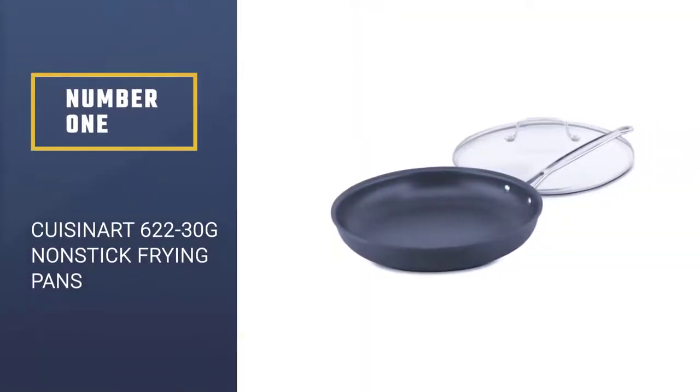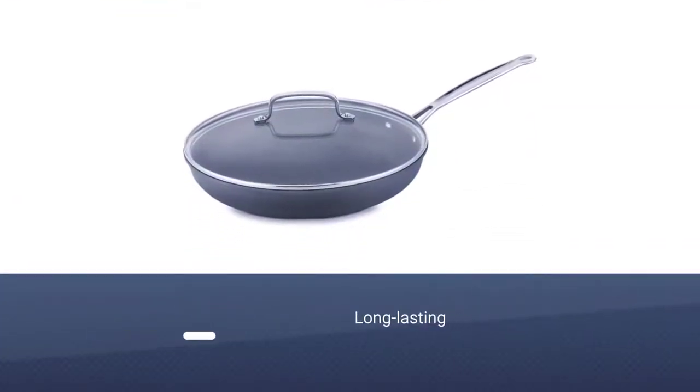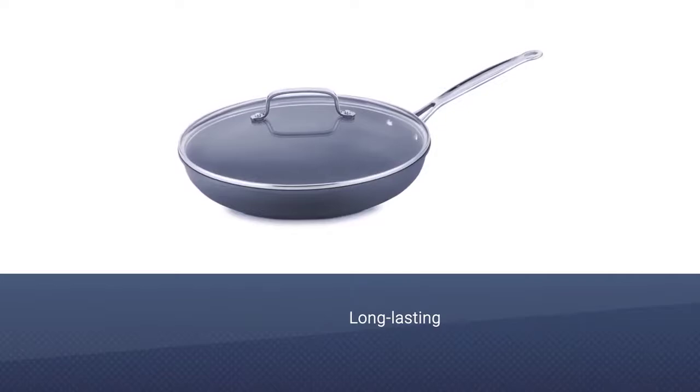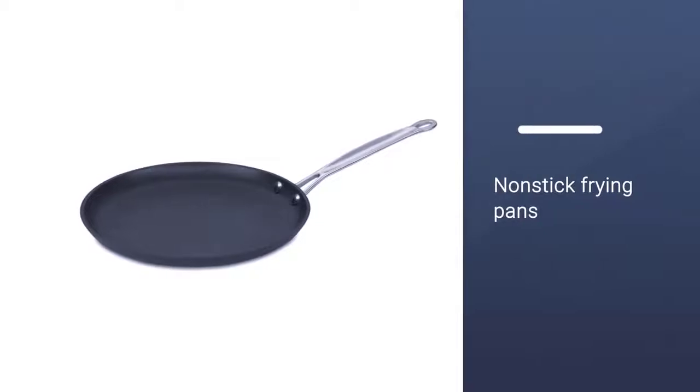Cuisinart 62230G Nonstick Frying Pans. This slope-sided pan has a hard anodized exterior and a proprietary quantanium nonstick interior and is built to last much longer than the nonstick pans you can pick up at the grocery store.